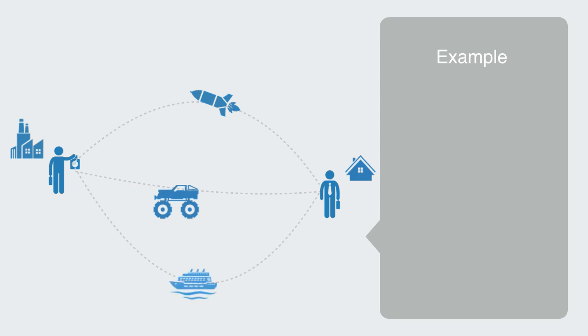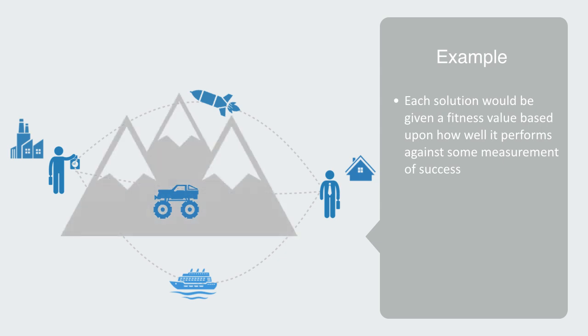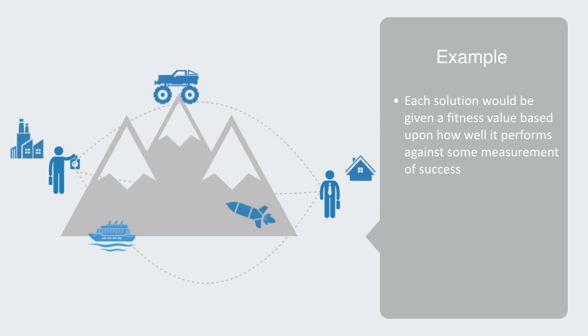We could then create a fitness landscape to represent this, where each one of these solutions would be given a fitness value based upon how well it performs against some measurement of success, such as time or cost. The result being, swimming or flying will likely end up at a low elevation relative to taking our car or the bus. We might also note that our car or bus strategy would be located in proximity to each other because they have many similarities, while swimming or flying would be placed at very different locations on this landscape.